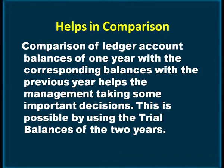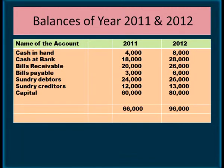Another objective of preparing a trial balance is that it helps in comparison. Comparison of ledger account balances of one year with the corresponding balances of the previous year helps management take important decisions. This is possible by using the trial balances of the two years. For example, cash in hand of 2011 and 2012 — 4,000 and 8,000; cash at bank of 2011 and 2012 — and so on. Trial balance helps us make such comparisons.